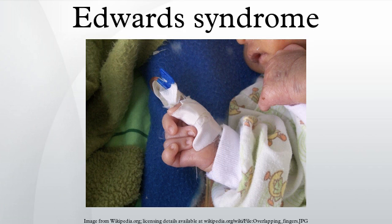Fertilization of eggs or insemination by sperm that contain an extra chromosome results in trisomy, or three copies of a chromosome rather than two. Trisomy 18 is caused by a meiotic non-disjunction event, in which a gamete is produced with an extra copy of chromosome 18, giving it 24 chromosomes. When combined with a normal gamete from the other parent, the embryo has 47 chromosomes with three copies of chromosome 18. A small percentage of cases occur when only some of the body's cells have an extra copy of chromosome 18, resulting in a mixed population of cells with a differing number of chromosomes — sometimes called Mosaic Edwards syndrome.